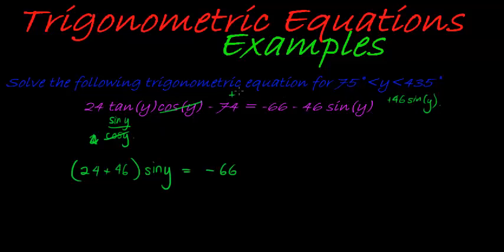To get rid of the negative 74 I must add it on both sides, so that I have negative, positive 74. And that gives me what do I have.